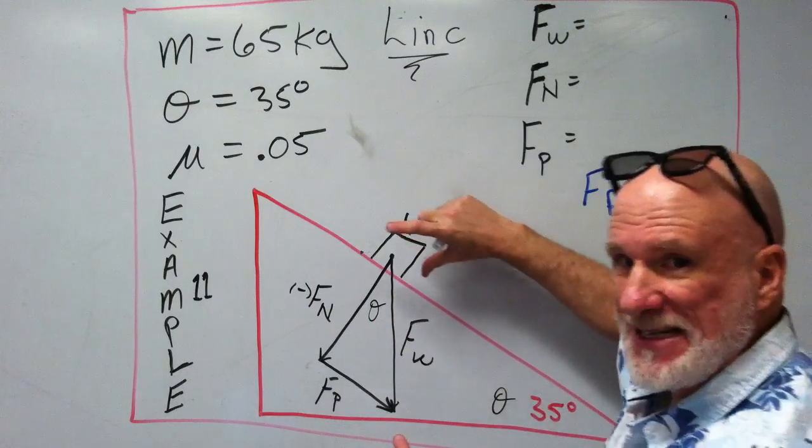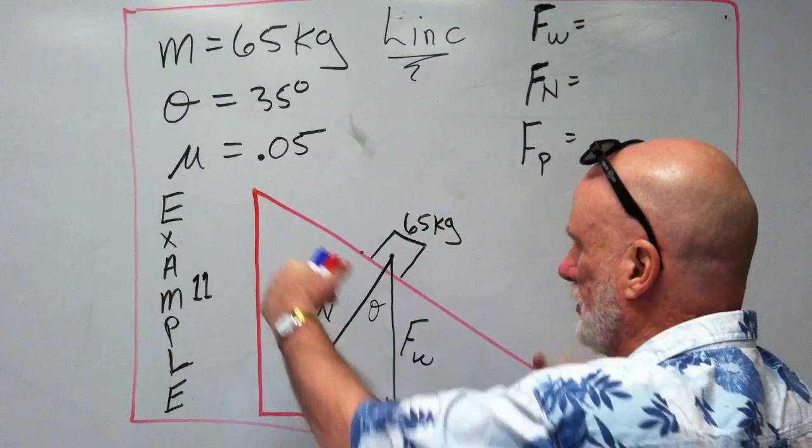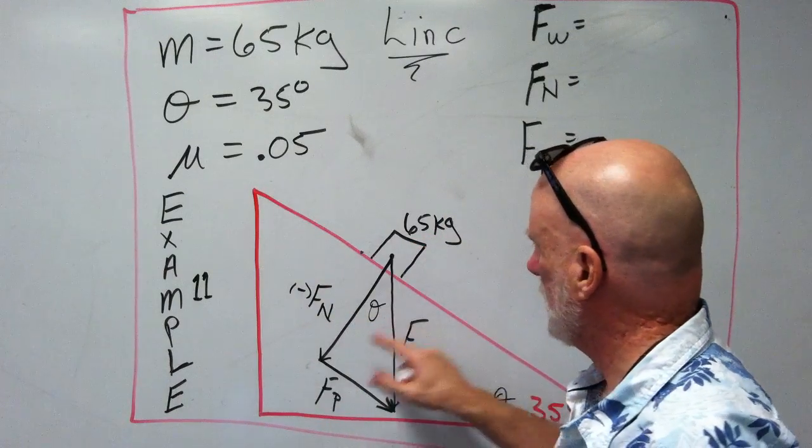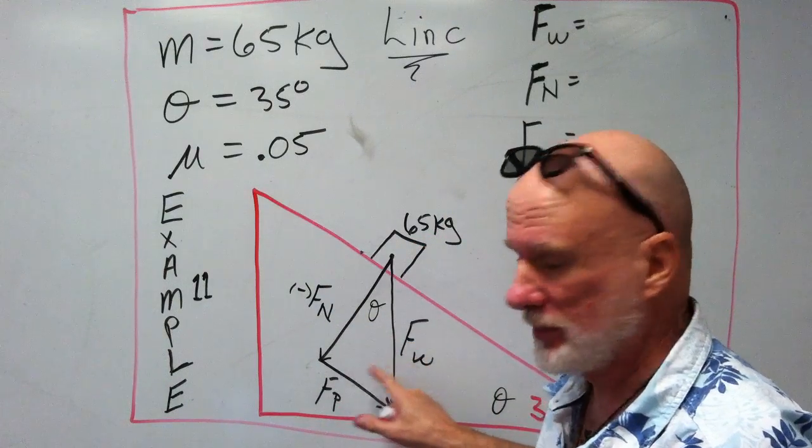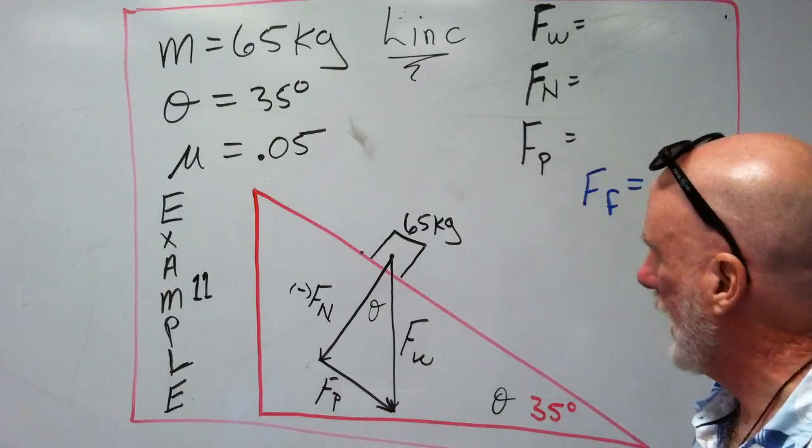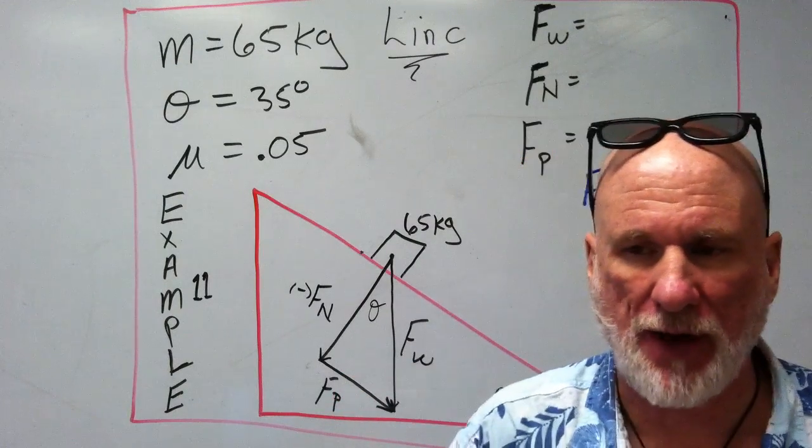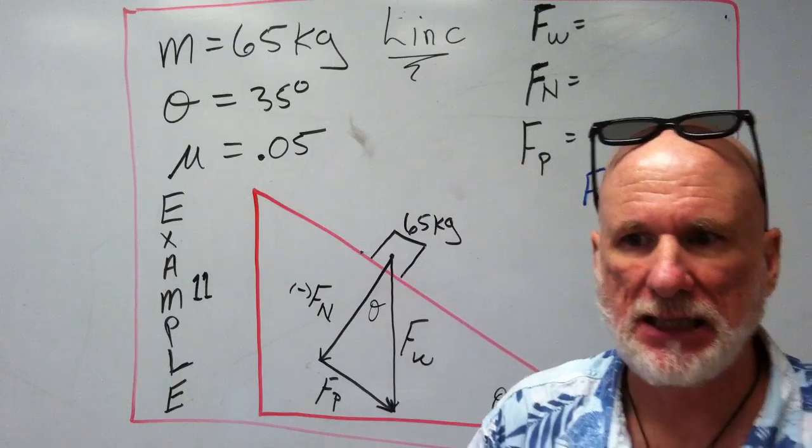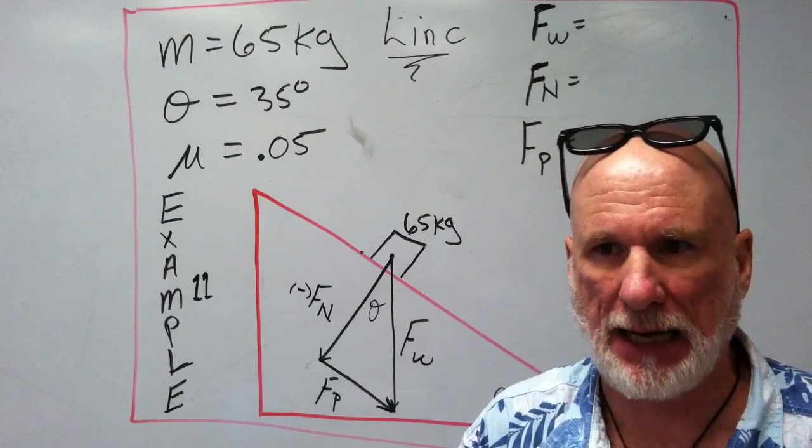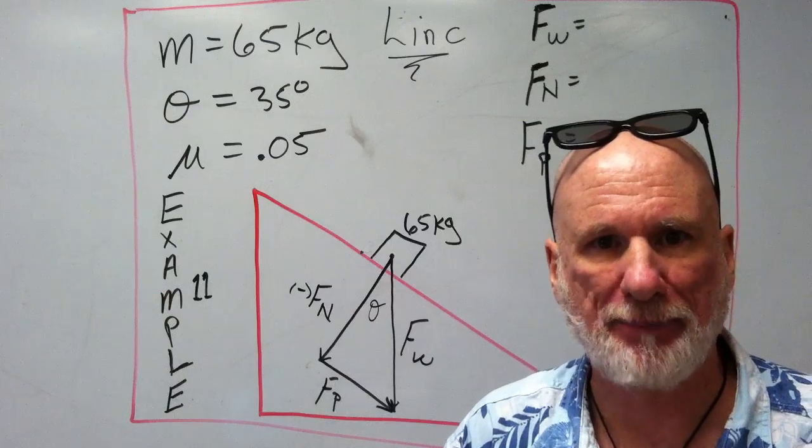If you kind of twisted this around, these triangles are the same. Now, what we want to do is we want to find how fast Link is accelerating down the ramp.